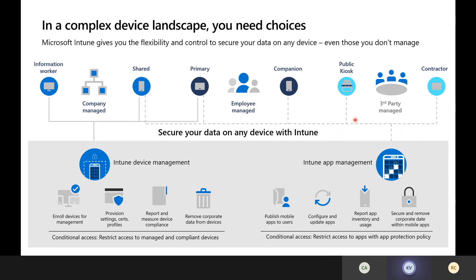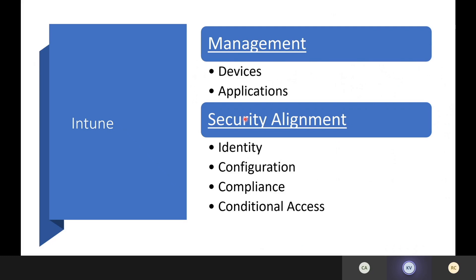Intune's app protection management and device management capabilities are designed to help you solve for all of those scenarios. Intune provides the ability to manage devices and corporate applications by controlling the way data is accessed or shared. User and device identity are aligned with use case scenarios: location, type, tasks, corporate-owned, and BYOD. Configuration profiles, compliance policies, and conditional access can be used as a baseline for the entire organization, or targeted to very specific use cases.